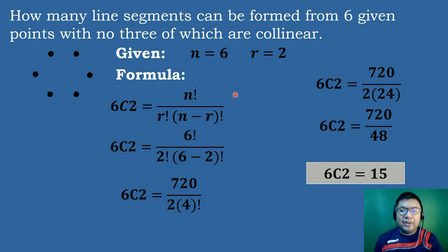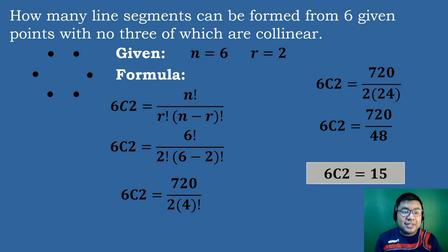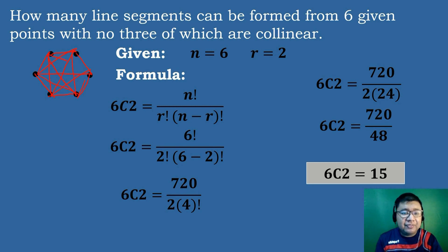Therefore, there are 15 line segments that can be formed from 6 given points with no 3 of which are collinear. Here are the 15 line segments: the 1st, 2nd, 3rd, 4th, 5th, 6th, 7th, 8th, 9th, 10th, 11th, 12th, 13th, 14th, and 15th line segment.